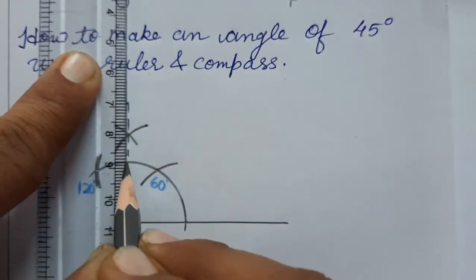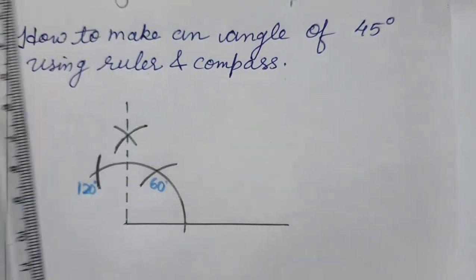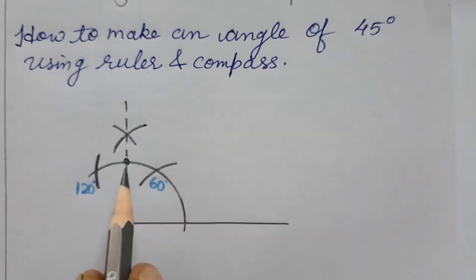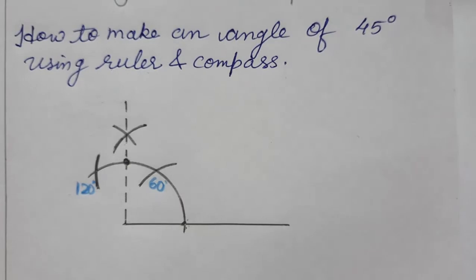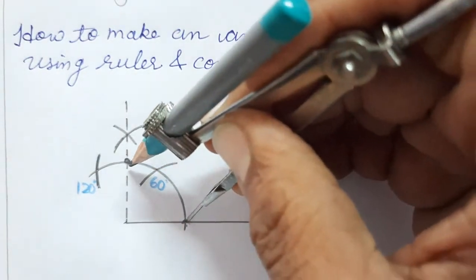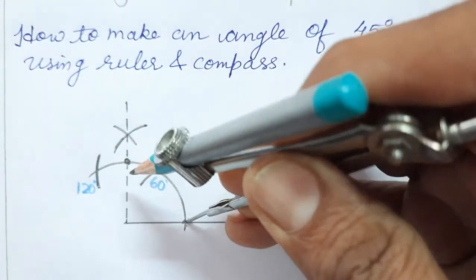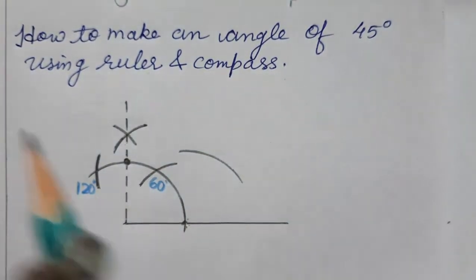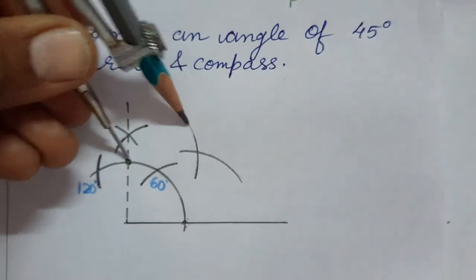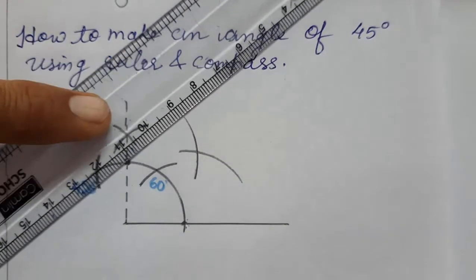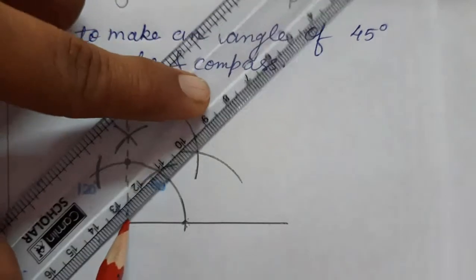Now this is 90. Now we are going to bisect these two, we will bisect 90 degrees and we'll get 45. So whichever we want to bisect, take more than half. This is full, see this is complete, take more than half. One arc from here and one arc from here. So see, this will become 45 degrees and we join it.